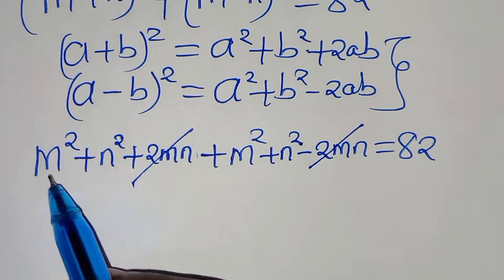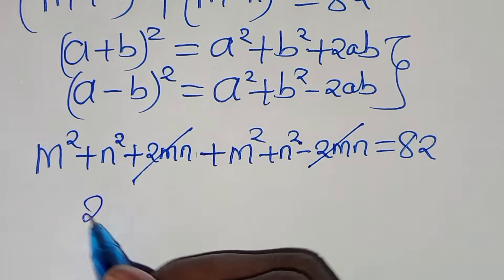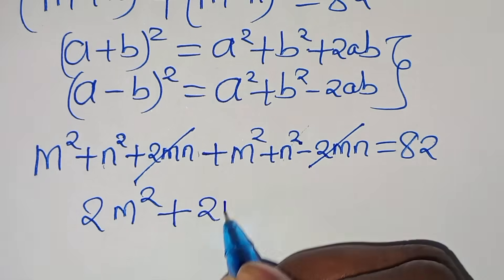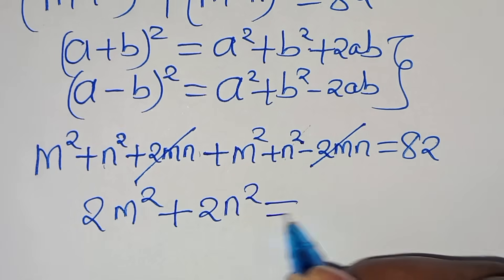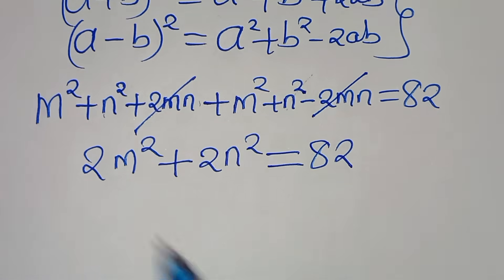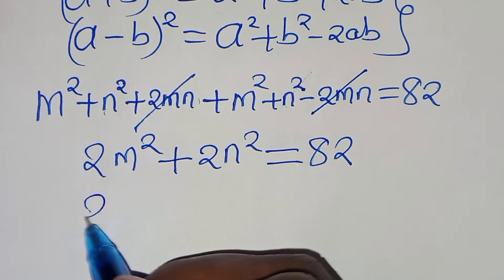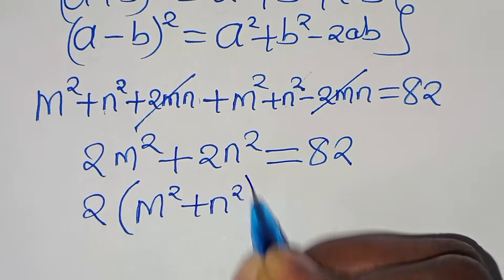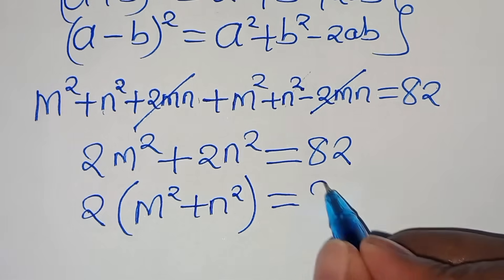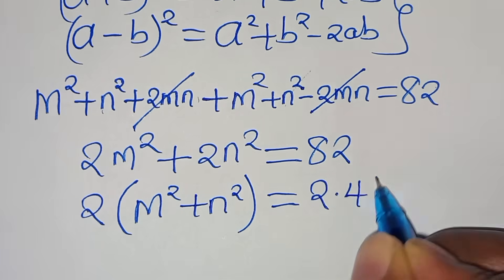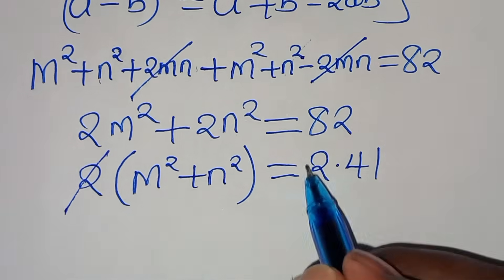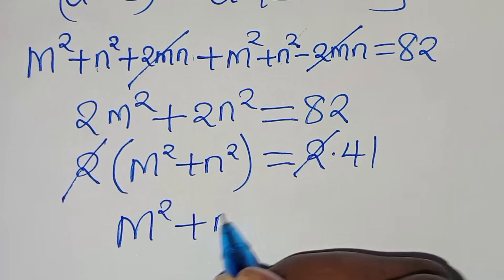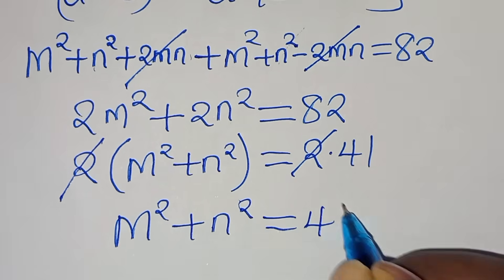Combining like terms: m² + m² gives 2m², and n² + n² gives 2n², so we have 2m² + 2n² = 82. Factoring out 2: m² + n² = 41, since 82 = 2 × 41.